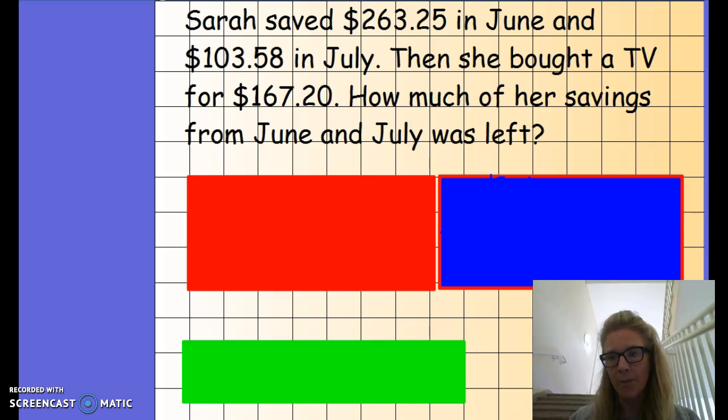Here is an example problem for you here. So, Sarah saved $263.25 in June, and $103.58 in July. Then she bought a TV for $167.20. So how much of her savings from June and July was left?